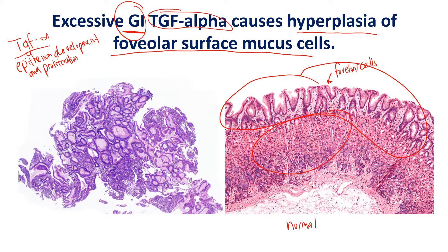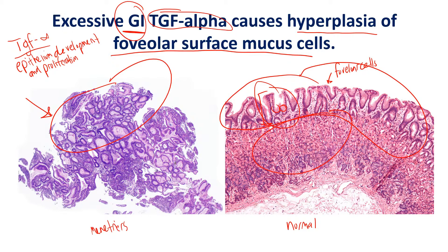These foveolar cells basically hyper-proliferate — too many form — and what you end up with is a complete disorganized mess. In a patient with Ménétrier's disease, you can see that there are tons of gastric pits formed, creating the overall gland structure. When you have hyper-proliferation of these foveolar surface mucous cells, you get glands all over the place, cystic spaces throughout, and the glands have essentially taken over all layers of the stomach.